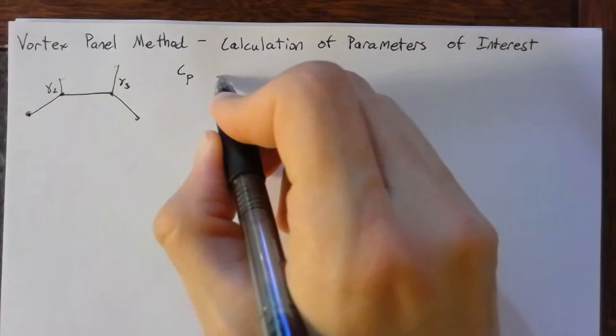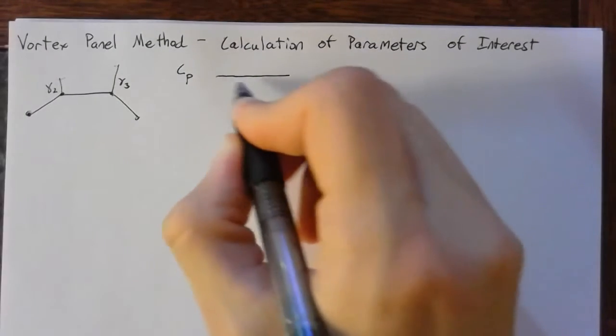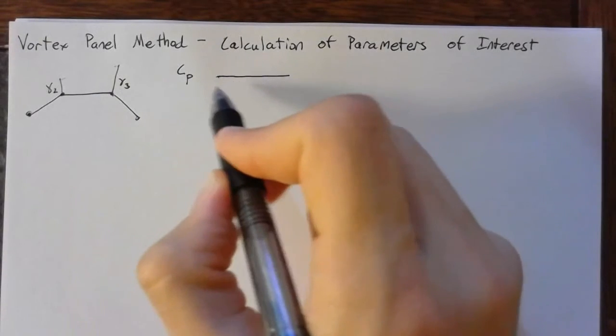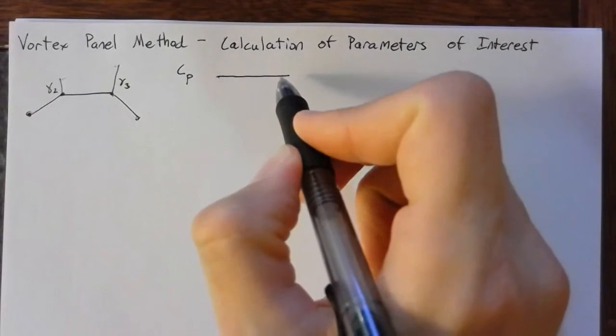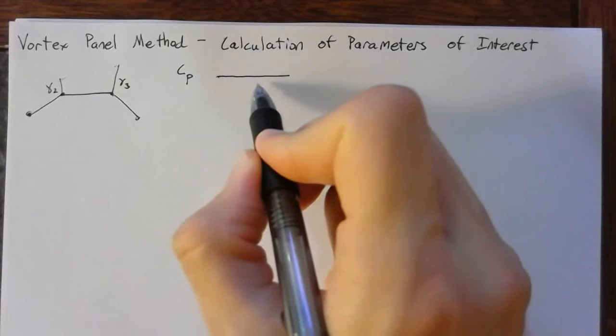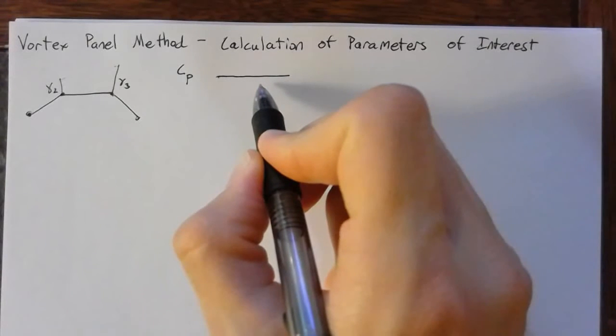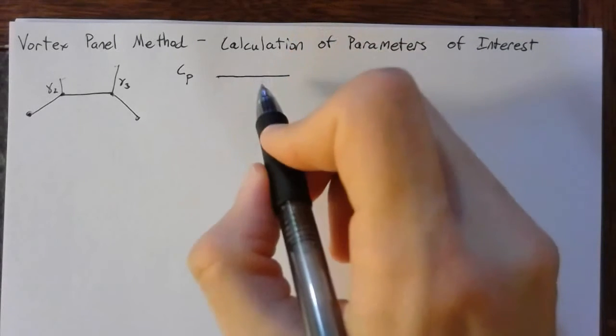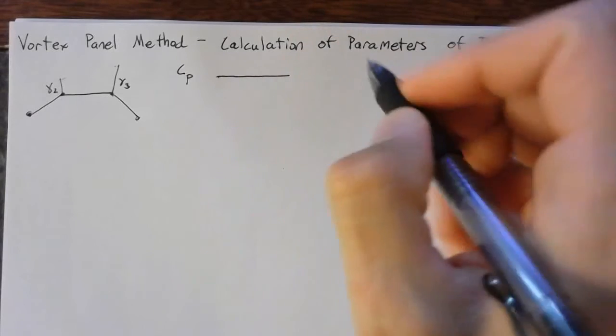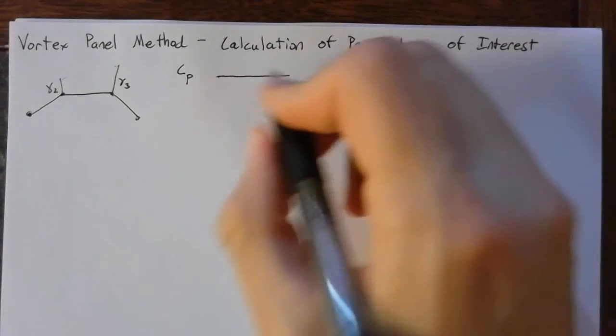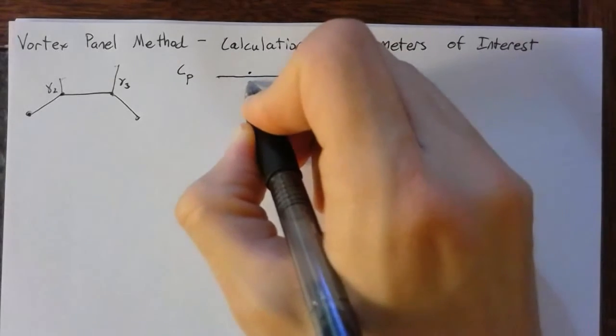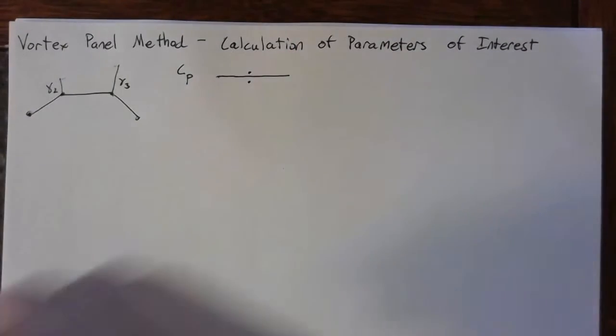The trick here is that this vortex panel acts as a line singularity that causes a jump in the velocity. It means that in order to find the coefficient of pressure on the surface, we need to find the velocity immediately above and immediately below the surface.